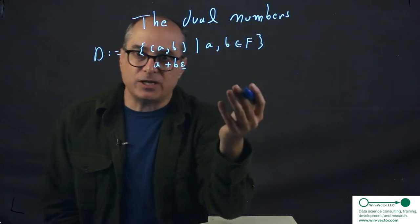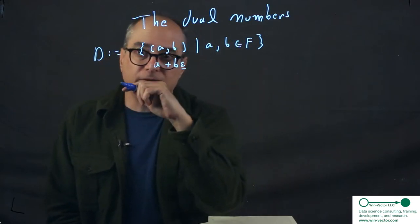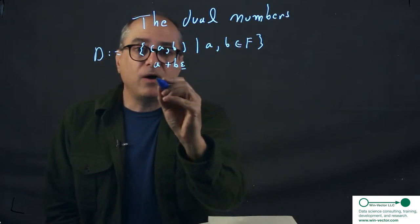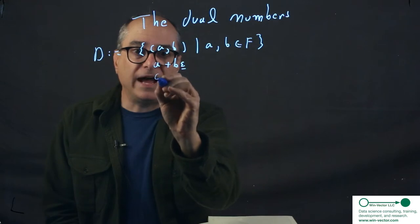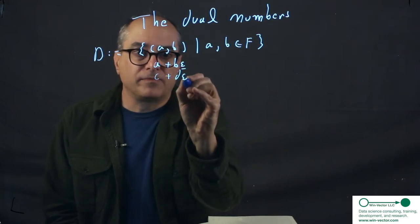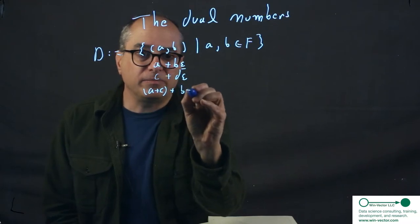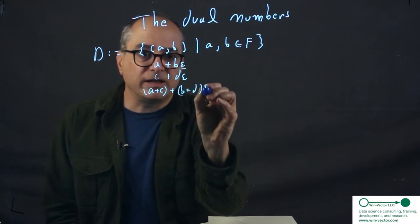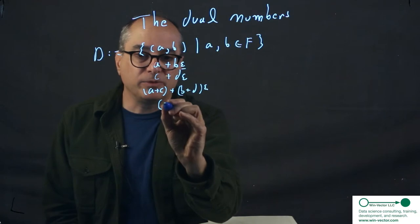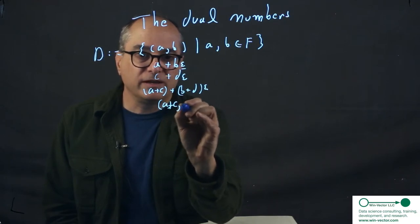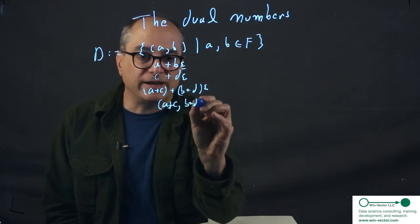Now, the arithmetic rules for these dual numbers are derived from their components. So if we want to add, it's just (a+c) + (b+d)ε. Or, again, in tuple notation, (a+c, b+d) is just adding component-wise.